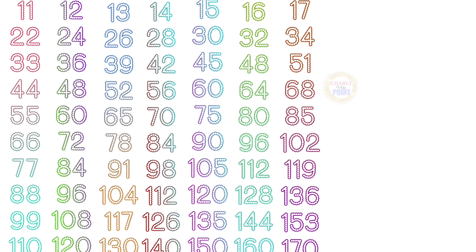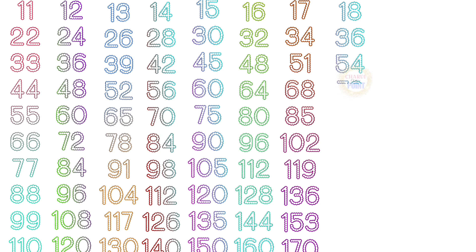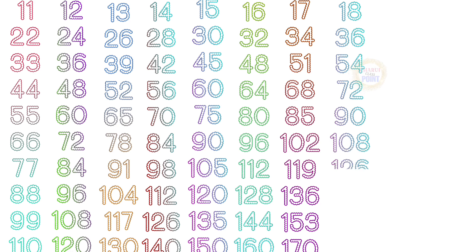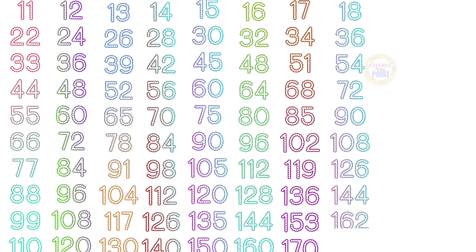Table of 18: 18×1=18, 18×2=36, 18×3=54, 18×4=72, 18×5=90, 18×6=108, 18×7=126, 18×8=144, 18×9=162, 18×10=180.